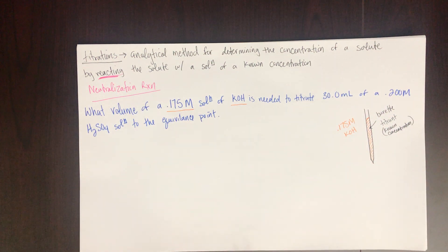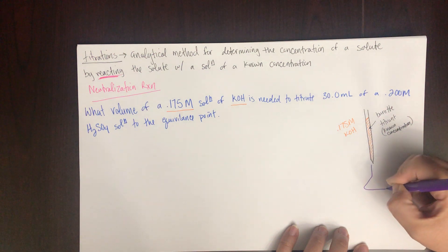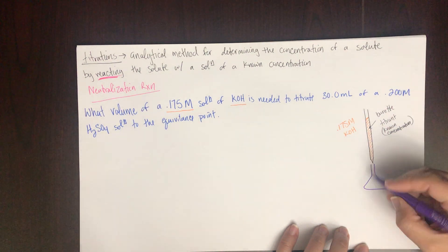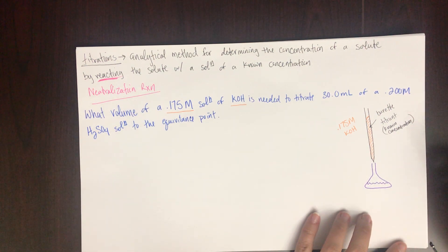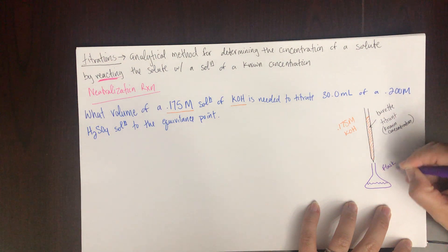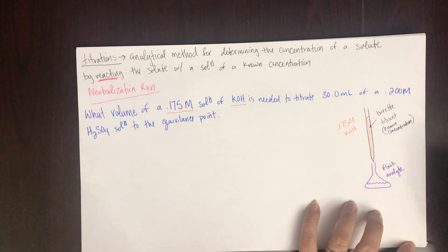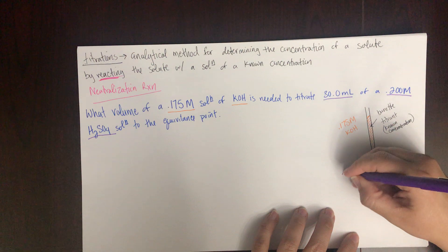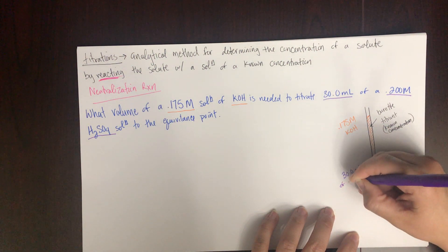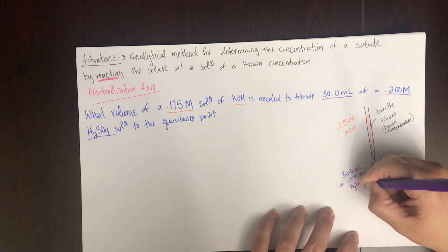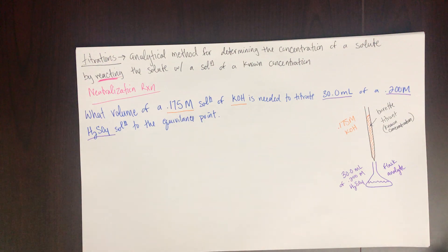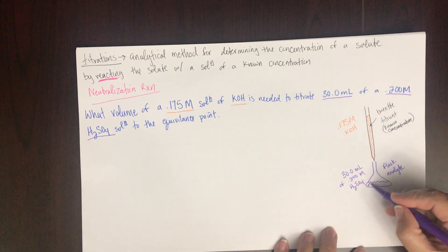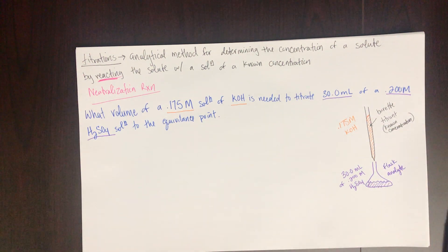We need to determine how much titrant to add to reach the equivalence point. In the flask below we have what's called the analyte — in this problem, 30.0 milliliters of a 0.200 molar sulfuric acid solution.